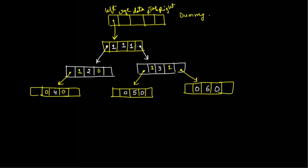Wherever rtag or ltag is 0, that node can point to a successor or predecessor of that node. The in-order for this tree is: 4, 2, 1, 5, 3, 6. Node 4 has no predecessor, so its left pointer stores the address of the dummy node.